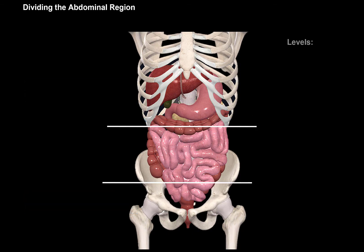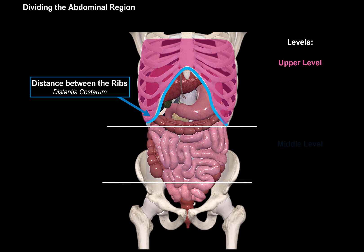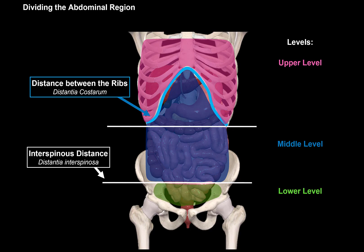This will divide the abdomen into three levels using this arch right here, that the lower edges of the rib cartilage form — that's the distance between the ribs, called distancia costorum. We get an upper level above this arch, a middle level under the costal arch until the interspinous plane, and then under the interspinous plane you will find the lower level.